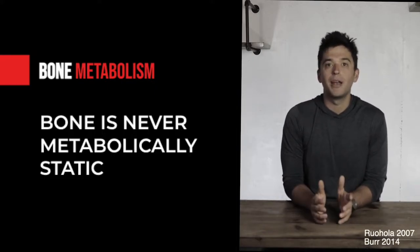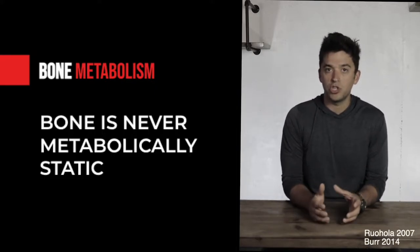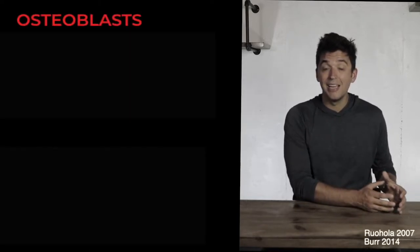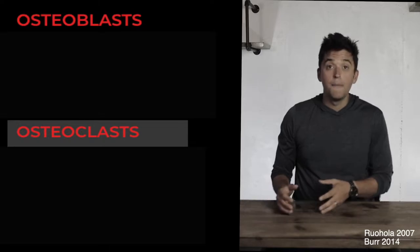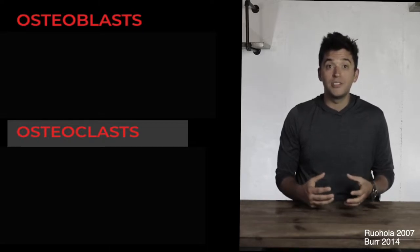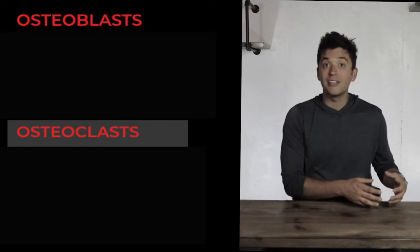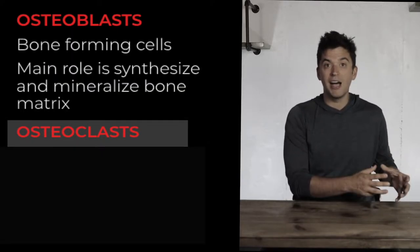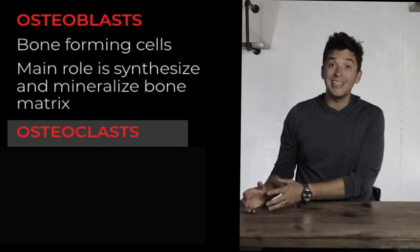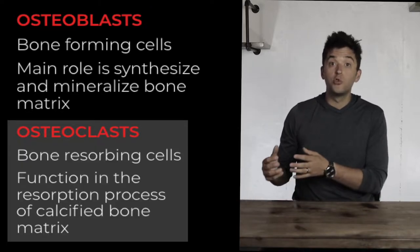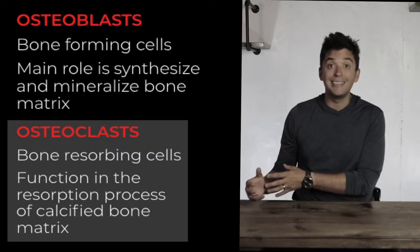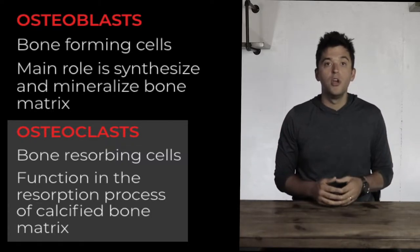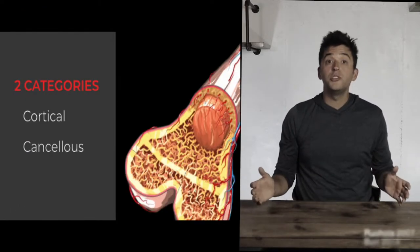Bone is never metabolically stable — it's always changing. This happens because of the relationship between osteoblasts and osteoclasts. Osteoblasts are bone-building cells that help deposit bone and make it stronger. Osteoclasts are bone-absorbing cells that break down bone. These two are constantly going back and forth throughout our life.